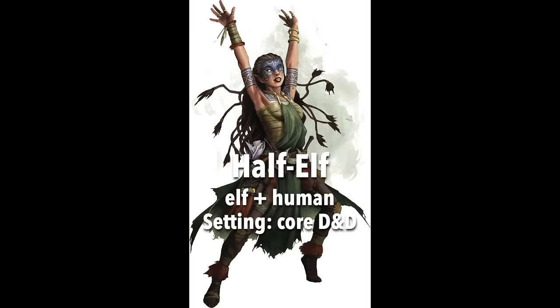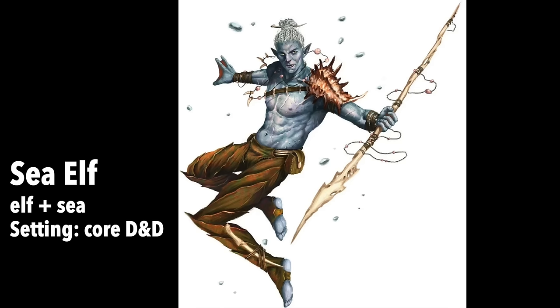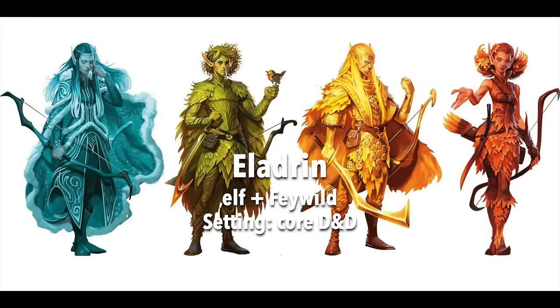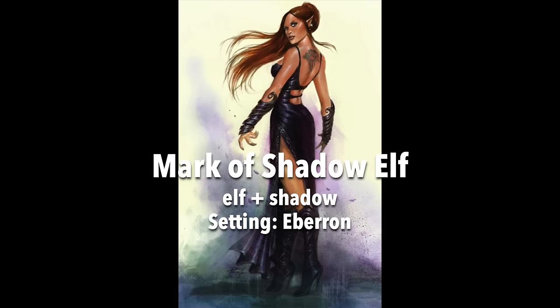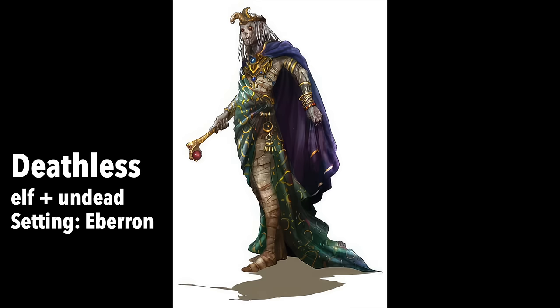Half-elf is elf plus human — the classic sub-race with great versatility and natural social skills. Technically it's considered its own race by the mechanics, but lore and identity wise it's a sub-race. Sea elf is elf plus sea — reclusive elves that dwell in the ocean. Eladrin is elf plus feywild — natives to the feywild with innate seasonal magic. Pallid elf is elf plus moon — mystical and intuitive elves who follow a moon goddess. Mark of Shadow elf is elf plus shadow — cunning elves excelling at performance and stealth who bear magical marks.